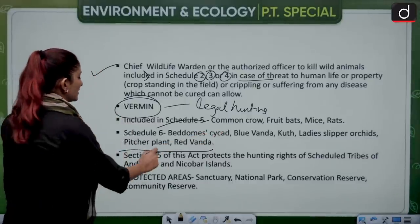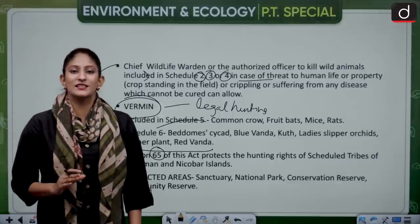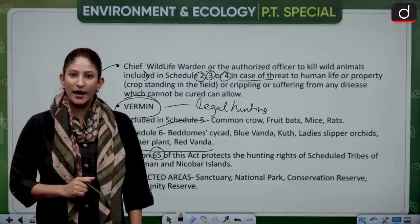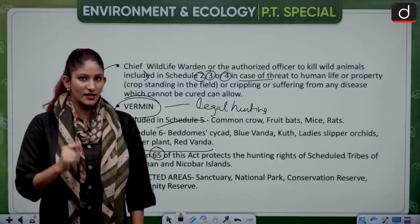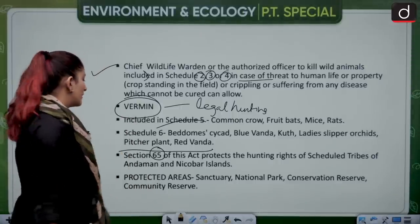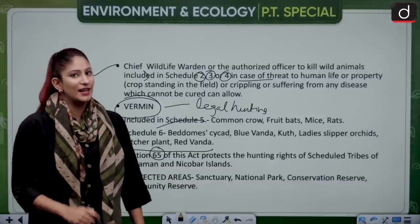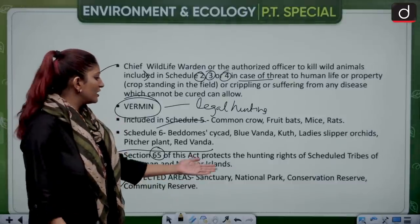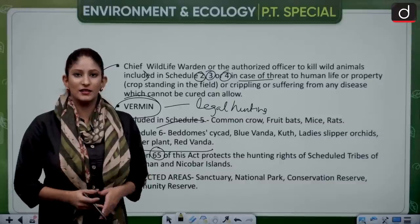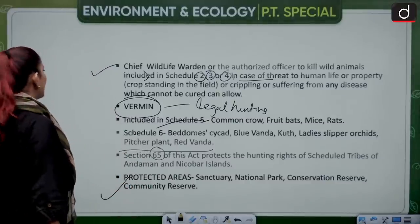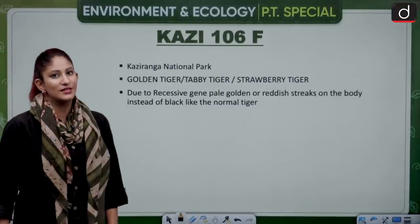Section 65 of the Act protects the scheduled tribes of Andaman and Nicobar if they hunt any wildlife. Protected areas are also included under this Act — that is, Sanctuary, National Park, Conservation Reserve and Community Reserve. Let's move forward and talk about Kaziranga's 106F tiger.